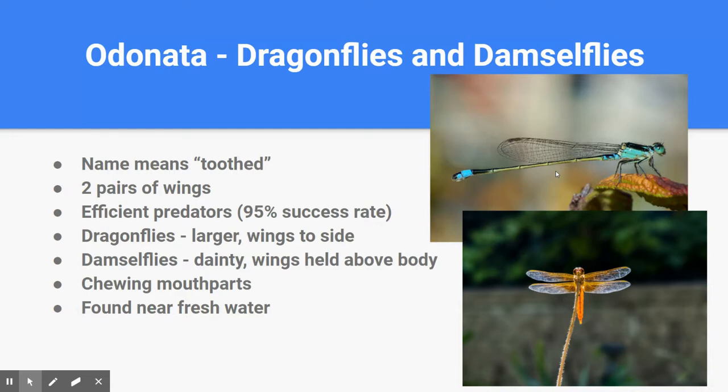Then we have the group called Odonata — our dragonflies and damselflies. This one is a little different; notice there is no 'tera' at the end, so they are named not for their wings but for their ability to chew — their durable, sturdy mouth structure. The name translates to 'toothed.' If you think about the dentist or orthodontist — 'ortho' means straighten, so the orthodontist straightens your teeth — anytime you see that base, it refers to teeth.